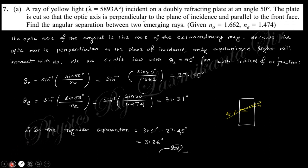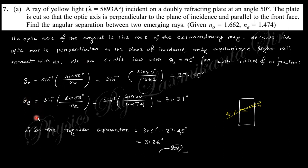The next question: a ray of yellow light is incident on a doubly refracting plate at a given angle. From Snell's law you can find the refracted angles for the ordinary and extraordinary rays. Note that the extraordinary ray does not obey Snell's law in general, but here the optic axis is placed along the plate axis, so the extraordinary ray also passes along the optic axis and Snell's law can be applied to both. Find the refracted angles for both rays and take their difference to get the answer.